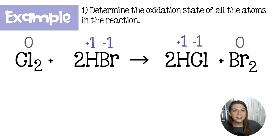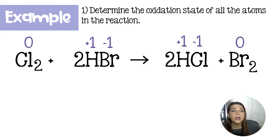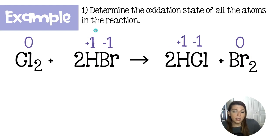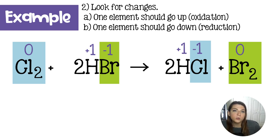Let me walk you through an example. Here we have the single replacement of chlorine and hydrobromic acid. Step one: determine the oxidation state of all of the atoms in this reaction. The diatomic chlorine is in its natural state, so it will be zero. The same is true for bromine — it's in its natural state. In HBr, H is going to be plus one because H is typically plus one unless bonded to a metal, and that makes bromine minus one. The same is true for the chlorine on the product side. Step two: look for changes, which I have color-coded. Chlorine goes from zero to negative one, and bromine goes from negative one to zero. One is going up and being oxidized; the other is going down and being reduced.